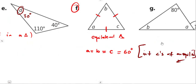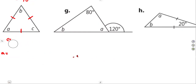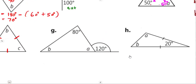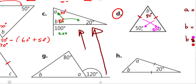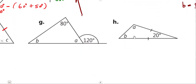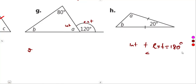On part g, we have an extended side, giving an exterior angle — the same concept as part c. Angle A can be found using angles on a straight line: A equals 180 degrees minus 120 degrees, which gives 60 degrees.